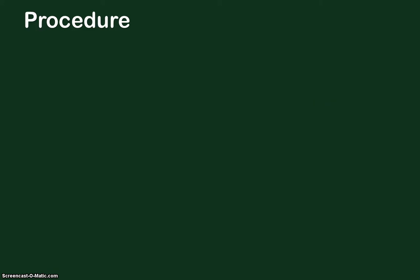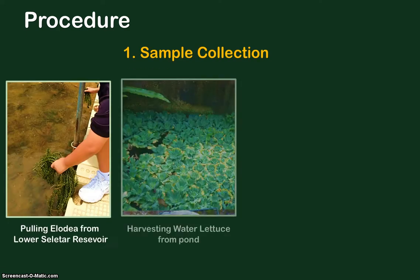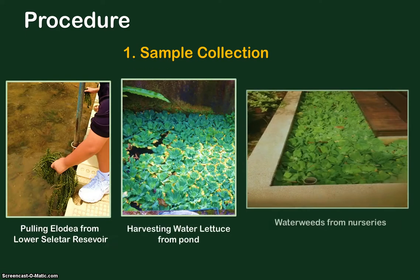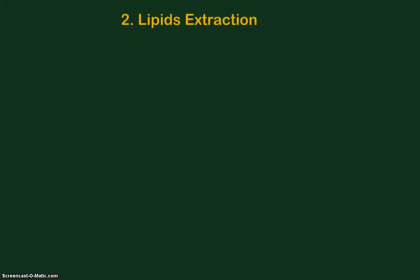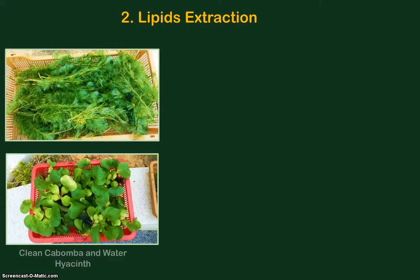We will list down the pictorial steps in converting the water weeds into biodiesel. We start with the collection of the water weeds from public reservoirs or nurseries. Then we wash the water weeds and sun-dry them under the sun for 24 hours.